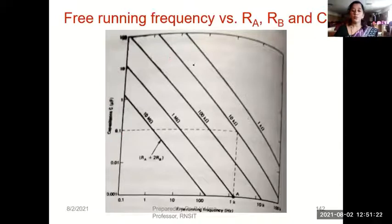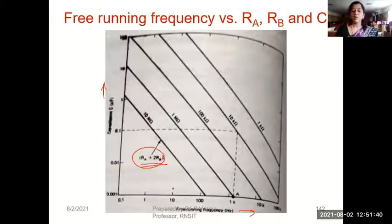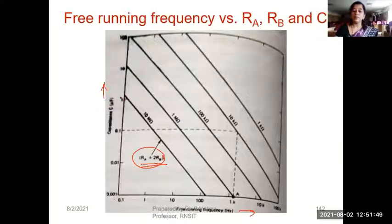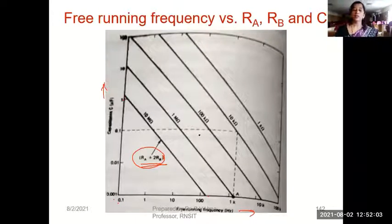A design chart uses Ra + 2Rb on the x-axis (frequency) and capacitor C on the y-axis. For fixed resistances, as capacitor C changes from 0.001 to 1 microfarad, the frequency changes from about 0.1 Hz to around 100 Hz on a single resistance line.